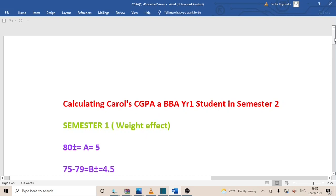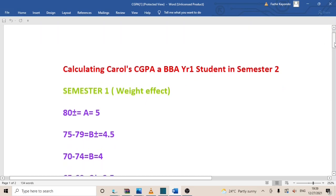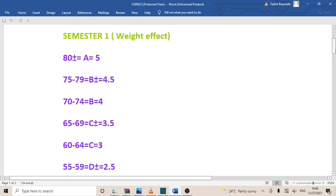With this information, I would like to calculate the semester one CGPA, or what I can call GPA, because before the next semester it is called a GPA. I'm going to be looking at the weight effect. For example, if you're doing particular course units in a particular semester, what is the weight effect of those course units?